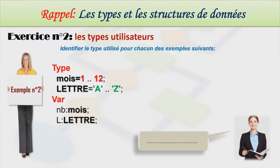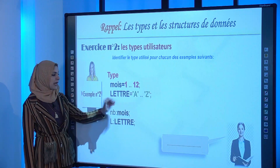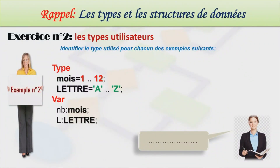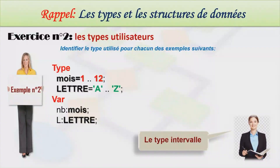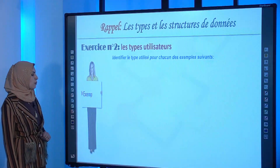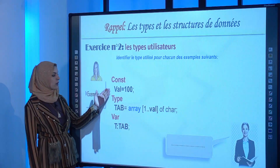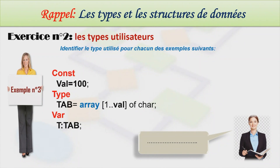Dans le deuxième exemple, le type mois contient des valeurs ordonnées de 1 à 12, et le type lettre contient les caractères ordonnés de A à Z. Il s'agit du type intervalle. Dans le troisième exemple, le type tab est défini par « array [1..val] of char » avec la constante val égale à 100. Puisqu'on utilise le mot-clé array, on parle du type tableau unidimensionnel, à une seule dimension.